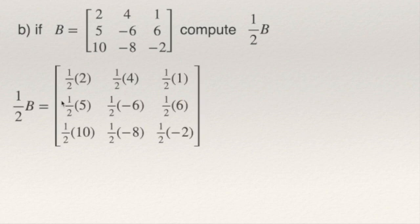So 1 half of B will be 1 half of 2, 1 half of 4, 1 half of 1, etc. So this will be 1 half of 2 is 1. So you cancel and the answer is 1. Here will be 4 divided by 2 is 2. So this entry will be 2. This entry will be 1 half or 0.5 if you are using decimals.